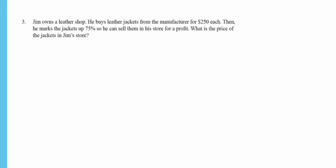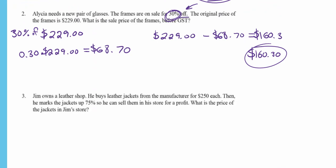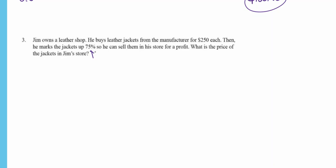Jim owns a leather shop and buys leather jackets from the manufacturer for $250 each, then marks them up 75% to sell for a profit. If he sold them for the same $250 he bought them for, he'd make nothing. So he needs to add 75% on top of his cost. This is similar to the discount question, but instead of subtracting we're adding.